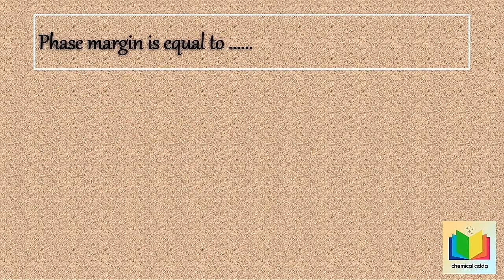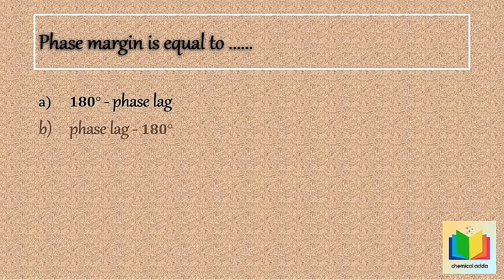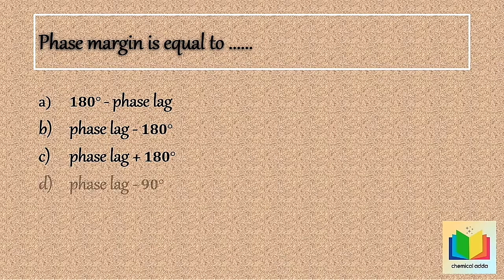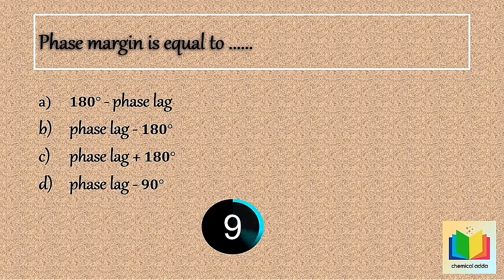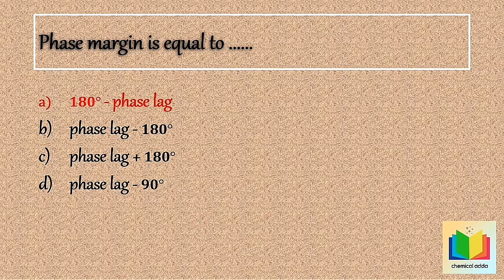Now next question — phase margin is equal to: Option A) 180 degrees minus phase lag, Option B) phase lag minus 180 degrees, Option C) phase lag plus 180 degrees, Option D) phase lag plus 90 degrees. Your time starts now. 10, 9, 8, 7, 6, 5, 4, 3, 2, 1. Stop. Answer is option A: 180 degrees minus phase lag.